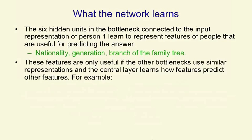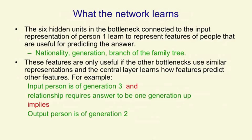Those features are only useful if the other bottlenecks — the one for relationships and the one near the top before the output person — use similar representations. The central layer says how the features of the input person and the features of the relationship predict the features of the output person. For example, if the input person is generation three and the relationship requires the output to be one generation up, then the output person is generation two. But to capture that rule, you have to extract appropriate features at both the first and last hidden layers and make the middle units relate those features correctly.